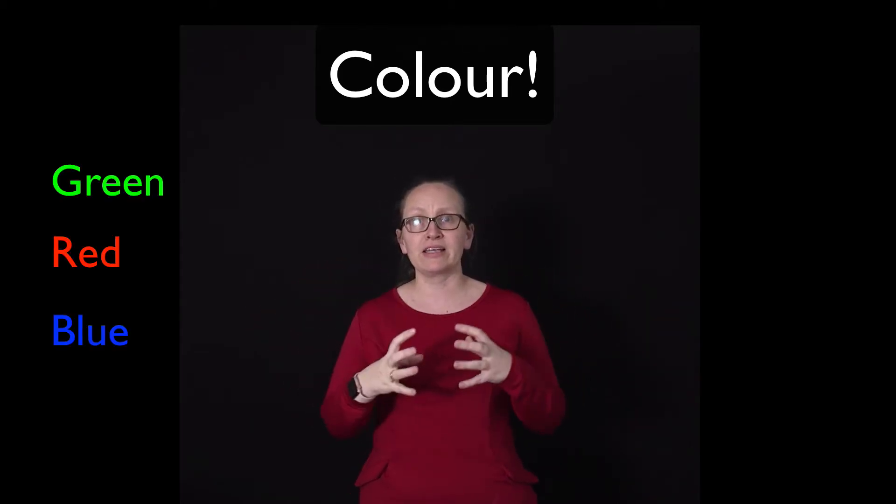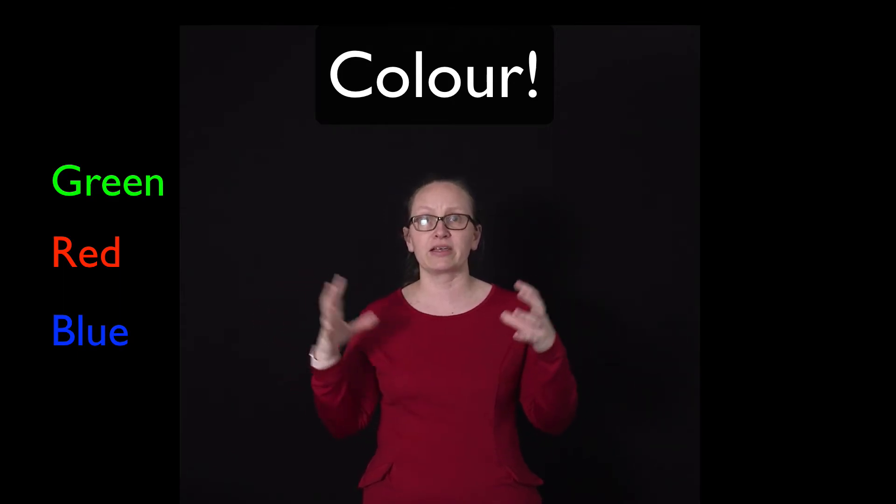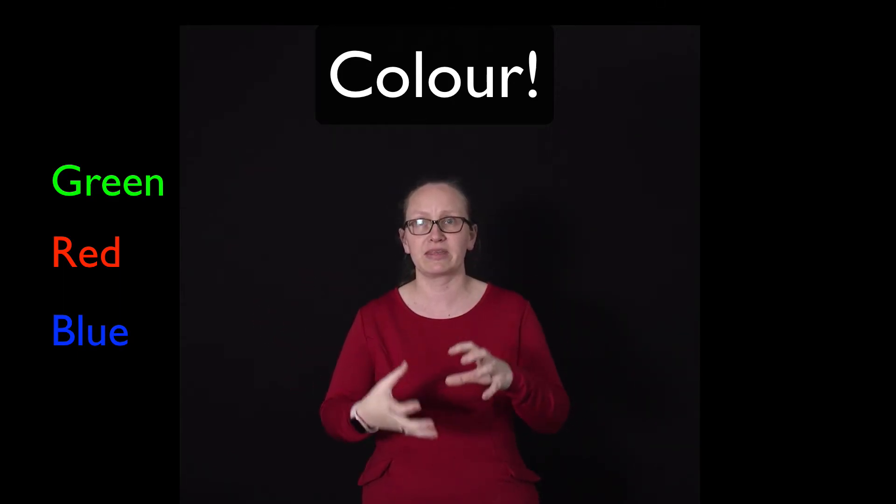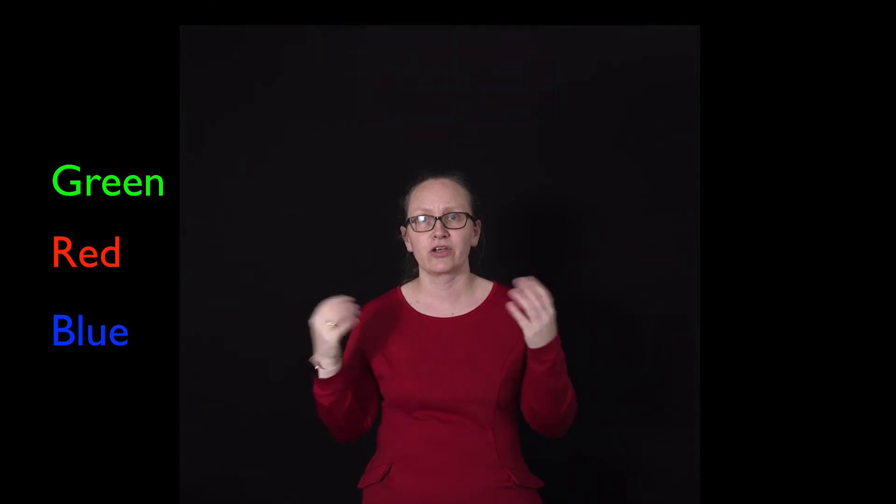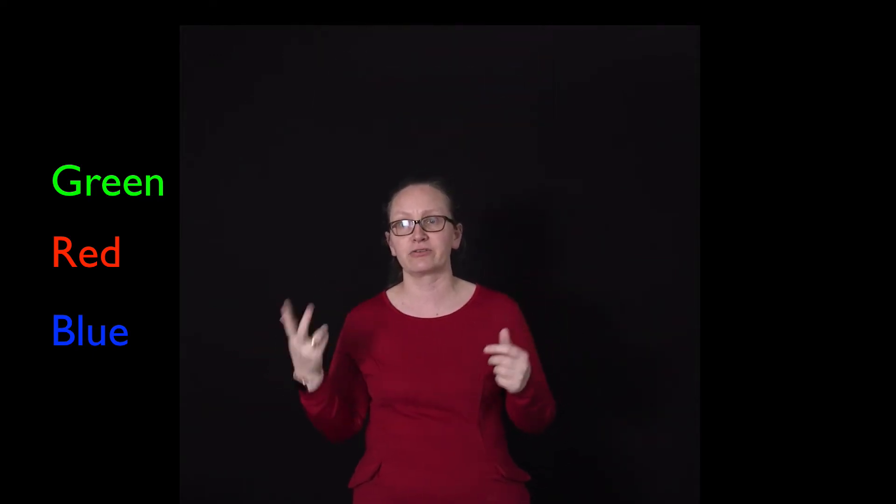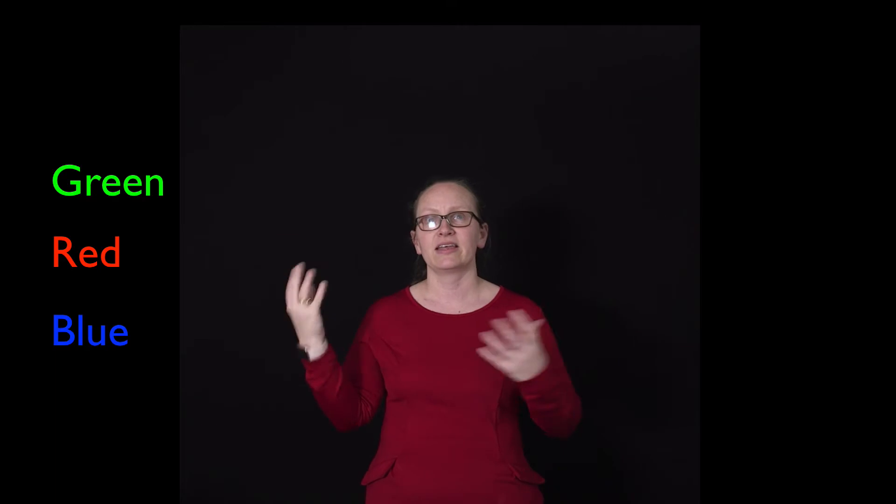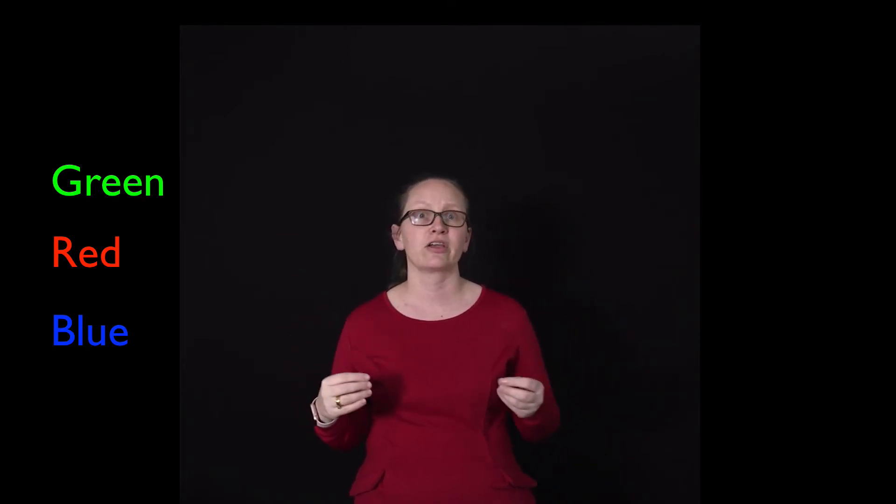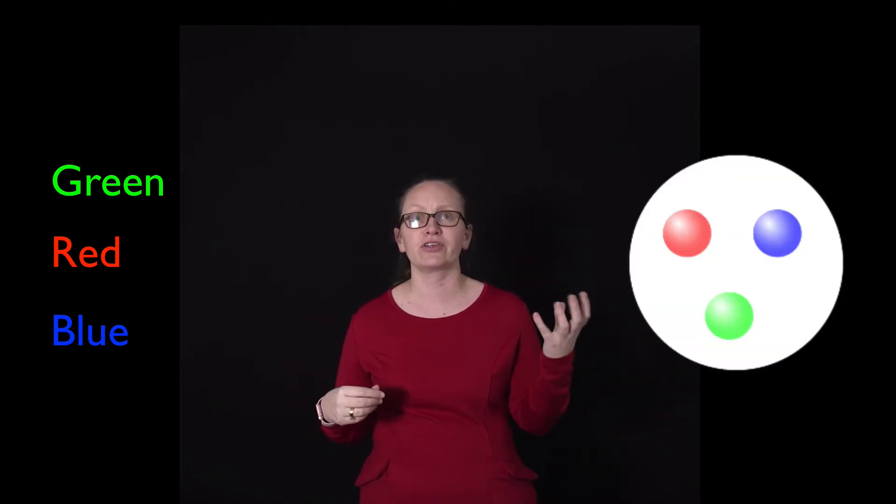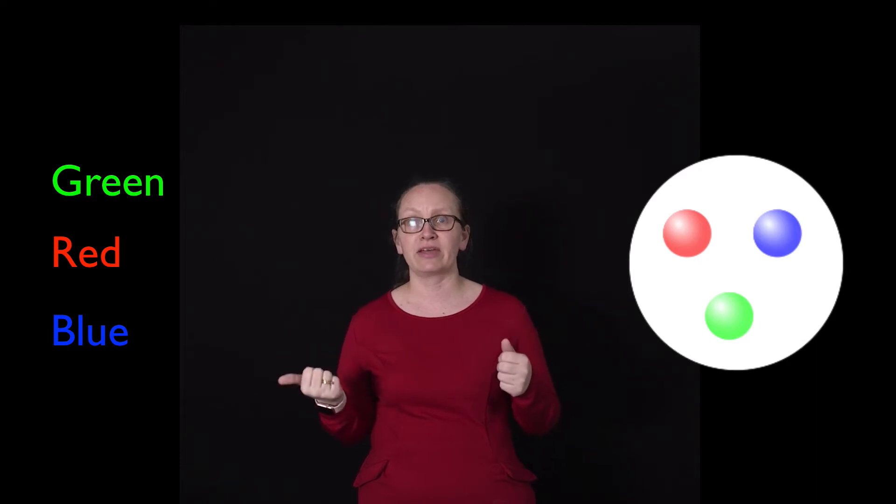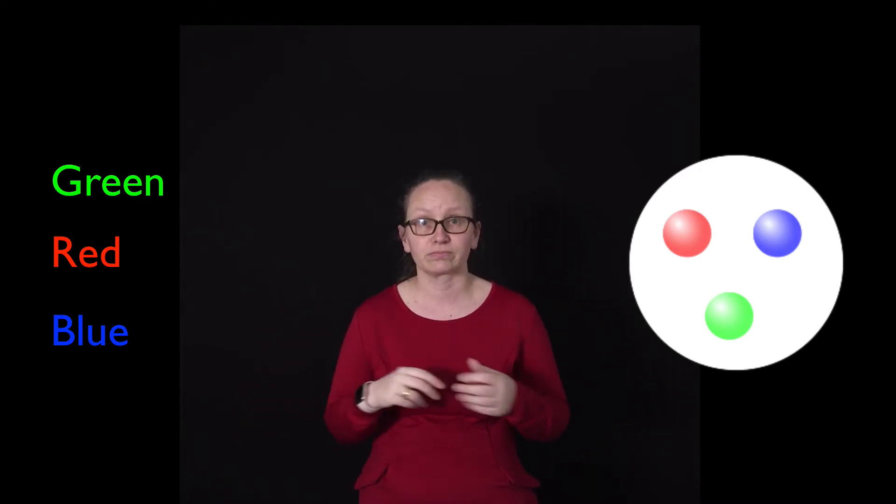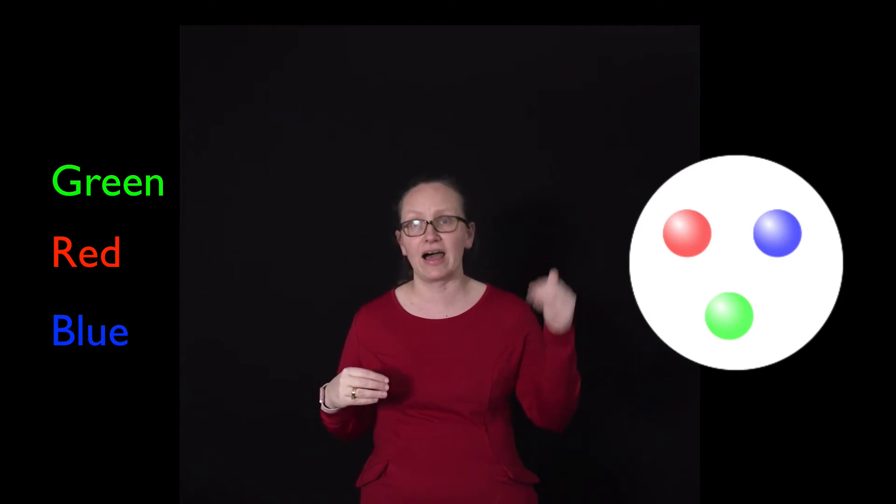The rule when combining quarks is that whenever we combine quarks, we have to end up with a colorless particle. Just as when we mix green, blue, and red light we end up with white light, this is a colorless combination. When we're building our proton, one of these quarks has to be green, one has to be blue, and one has to be red, and the same for our other baryons.